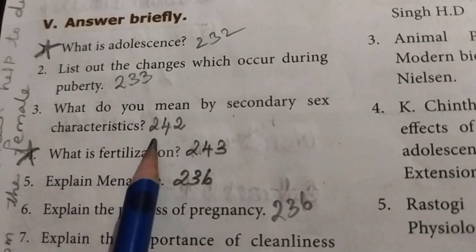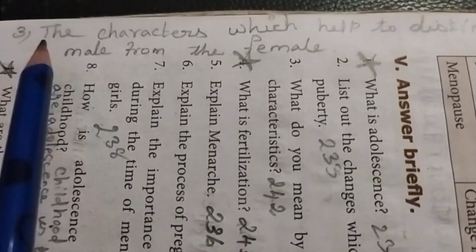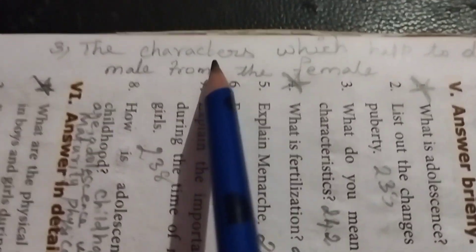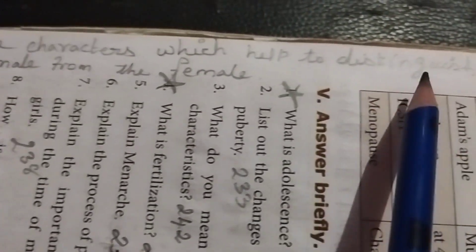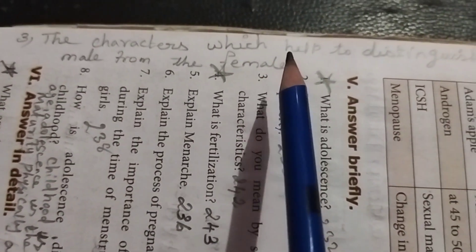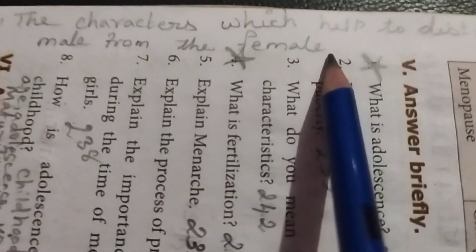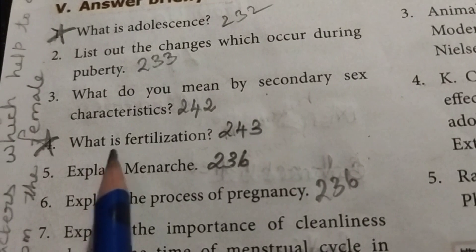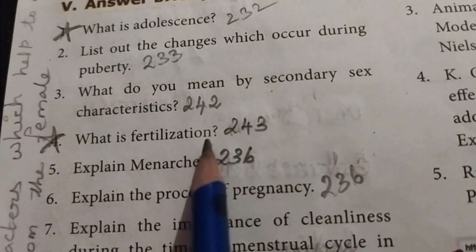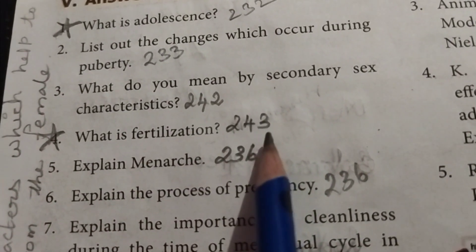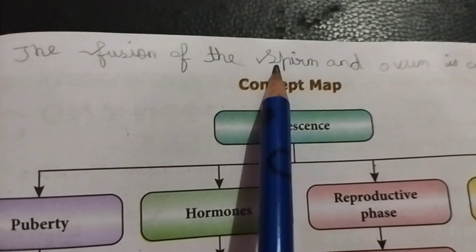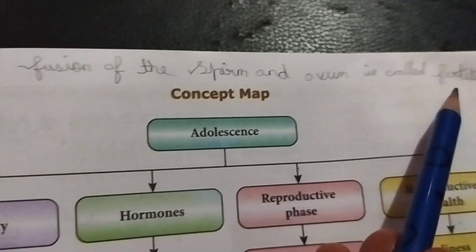Question 3: What do you mean by secondary sex characteristics? Page number 242. The characters which help to distinguish male from female. Question 4: What is fertilization? Page number 243. The fusion of the sperm and ovum is called fertilization.